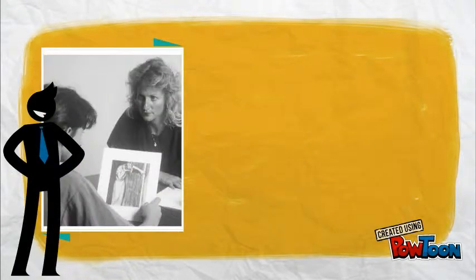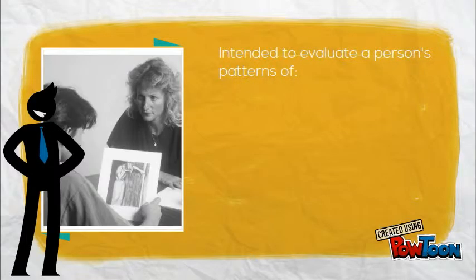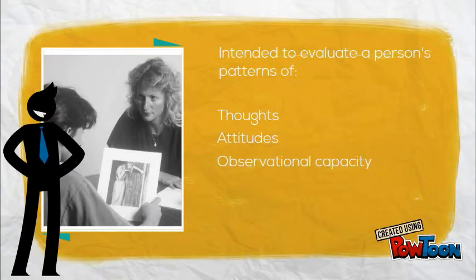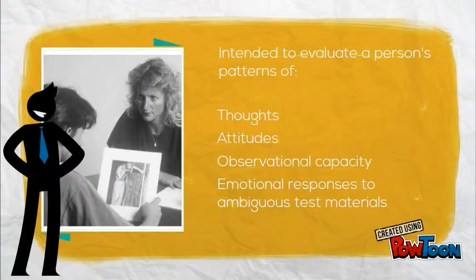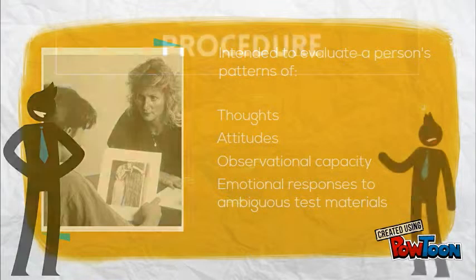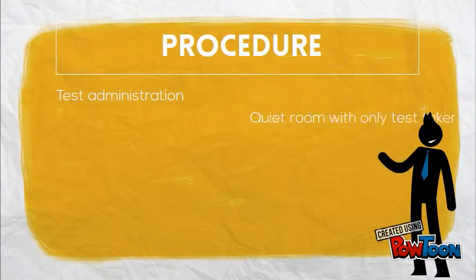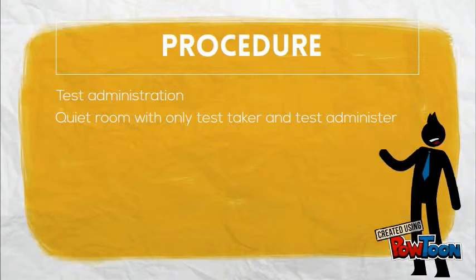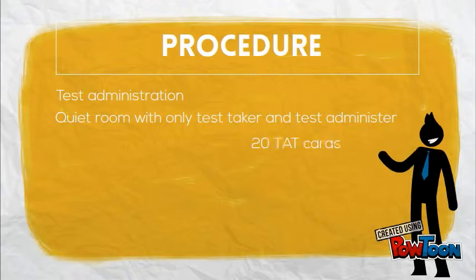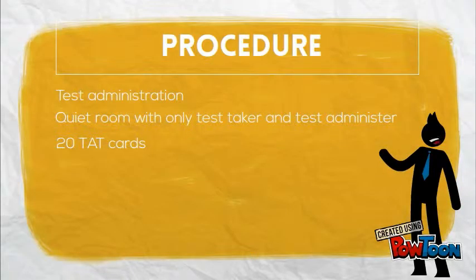The test is intended to evaluate a person's patterns of thoughts, attitudes, observational capacity, and emotional responses to ambiguous test materials. The test administration takes place in a quiet room where only the test taker and test administrator are present. The test commonly uses 20 TAT cards, though 8 to 12 cards are also acceptable.